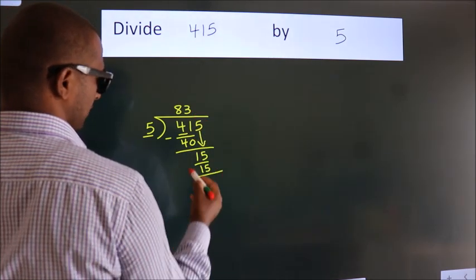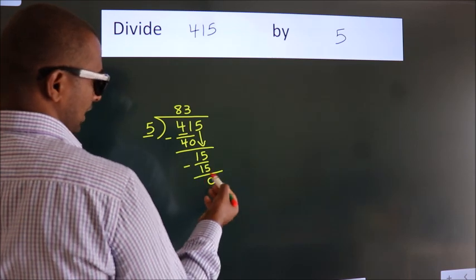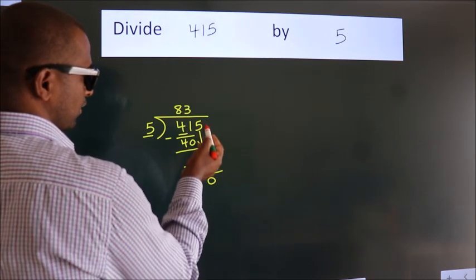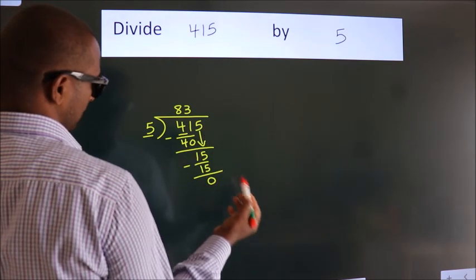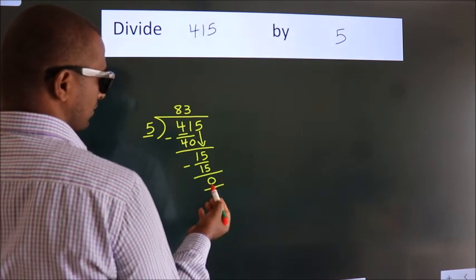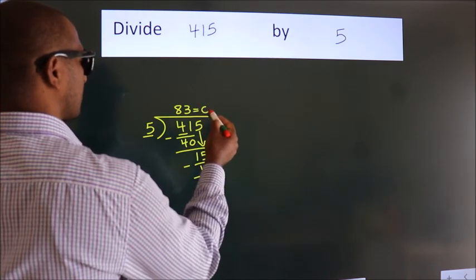Now we subtract. We get 0. After this, no more numbers to bring down and we got remainder 0. So this is our quotient.